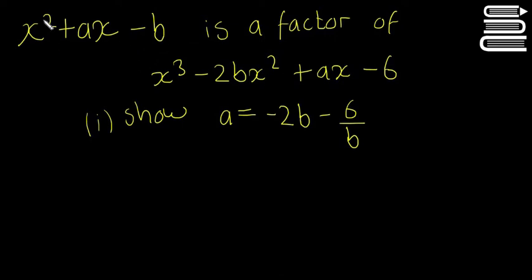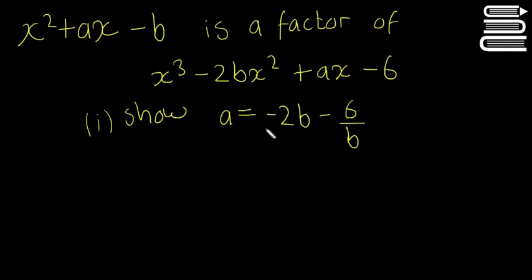So the question is: x squared plus ax minus b is a factor of this cubic equation here. We need to show that a is equal to minus 2b minus 6 over b. It doesn't really matter what it says there — we're just going to do the same method every single time and hopefully at the end it will match. So we're going to go straight ahead and divide this by this using long division.